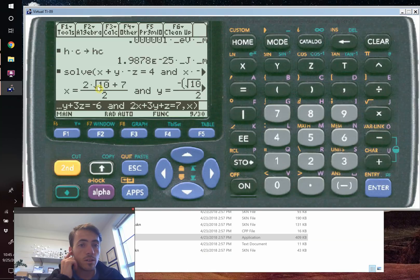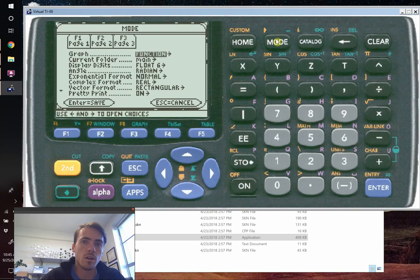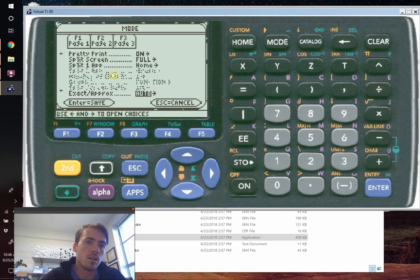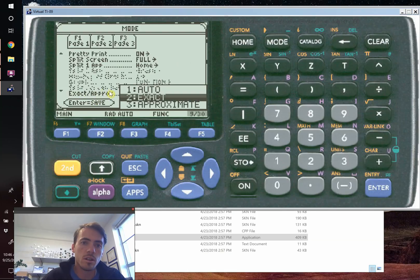If you ever wanted to change that, and you don't care about that, you can do so. Under MODE, we're going to scroll down, and at the very bottom of MODE, here, this one that says exact versus approximate, let's go ahead and tell it to do approximate.